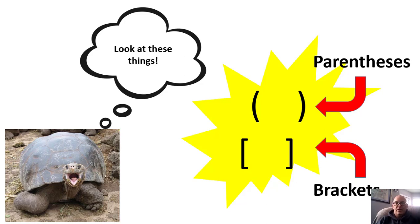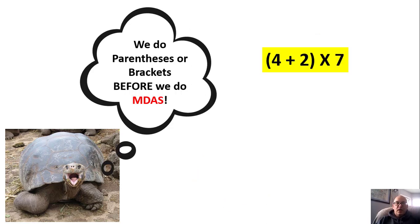We do parentheses or brackets before we do MDAS. So look at this question in the yellow here. We have some parentheses. We do the things inside of the parentheses before we do the things outside of the parentheses. So if we didn't have parentheses, what would you do first? That's right, you would do the times first, two times seven.